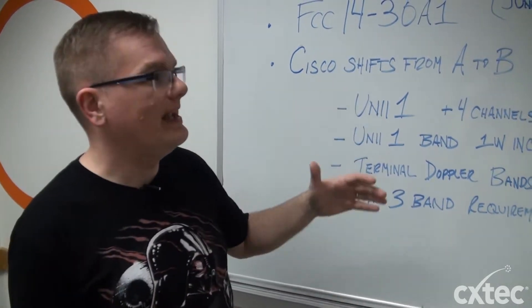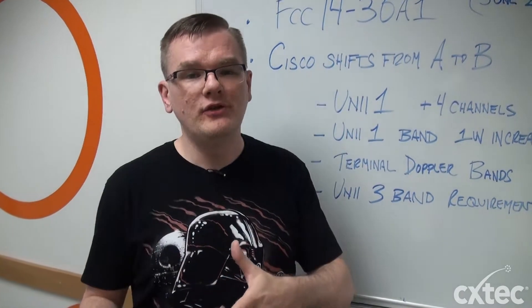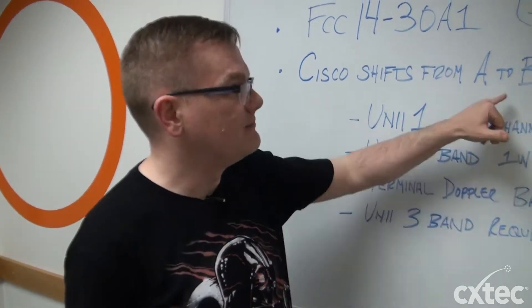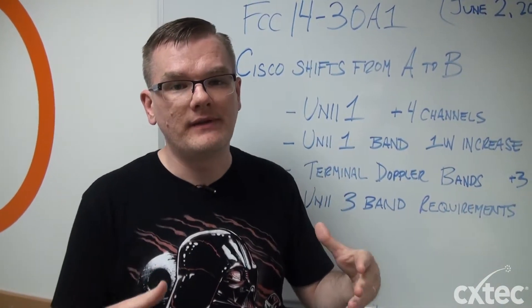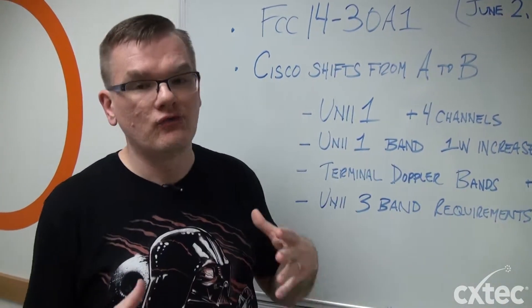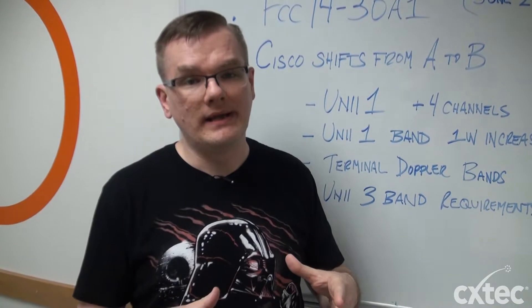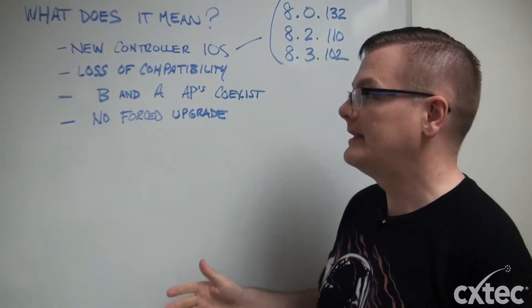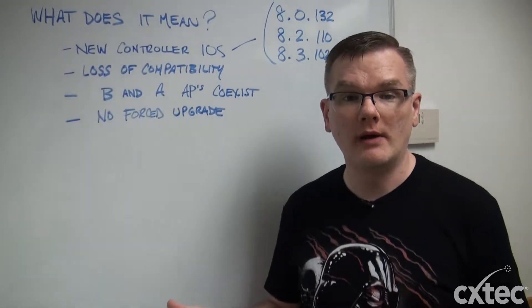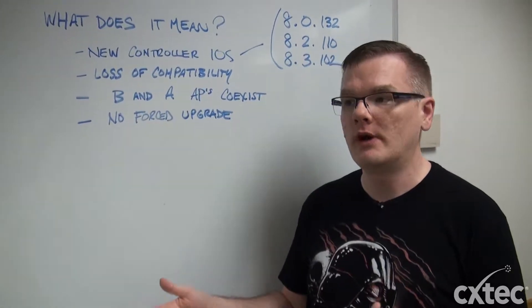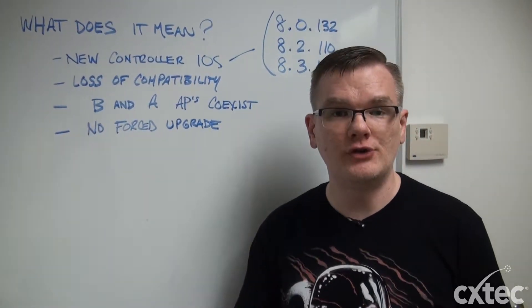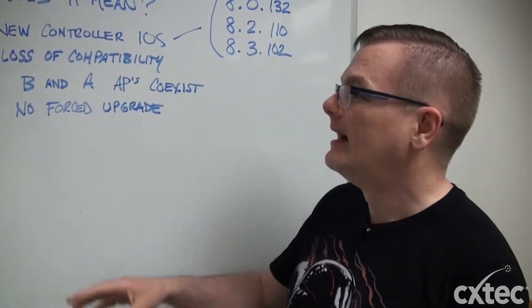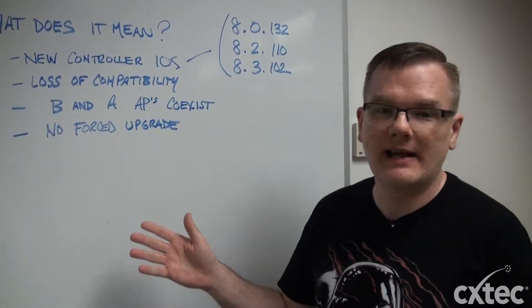A lot of what was changed from the A domain to the B domain, as far as the U.S. is concerned — and I do want to point out that this B domain is a U.S.-only thing — all of those changes really affect the 5 gigahertz radio. So what does this mean for us? Well, if we're going to make the transition from A to B or start purchasing A or B access points, what kind of effect is that going to have on us?